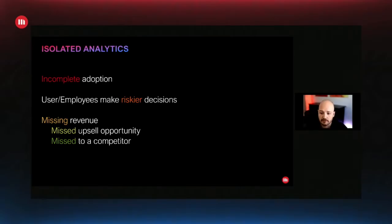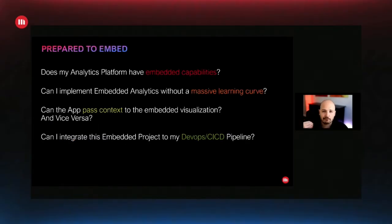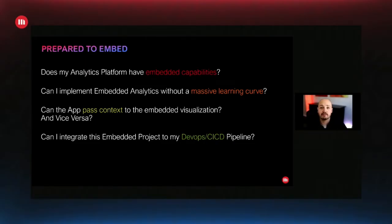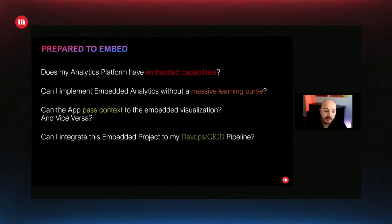So how do we get there? How does the journey start? We have to ask ourselves a couple of questions. Obviously, if you are in the business of building software, the first question is: maybe I want to build it myself. You could — it's a challenging journey, though, because it takes a lot out of your core application's value. Instead, you could be looking at a third-party application that has 30 years of R&D packed into a razor-sharp analytics platform. So the first obvious question is: does my analytics platform have embedded capabilities?